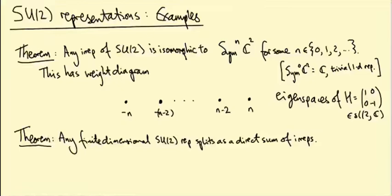It's also true that any finite-dimensional representation of SU(2) splits as a direct sum of irreducibles. The proof is very similar to the proof for U(1) once you understand how to integrate over the group SU(2), so we're not going to prove this complete reducibility theorem — we'll just assume it. What we're going to do in this video is take some examples of SU(2) representations and decompose them into irreducible summands.